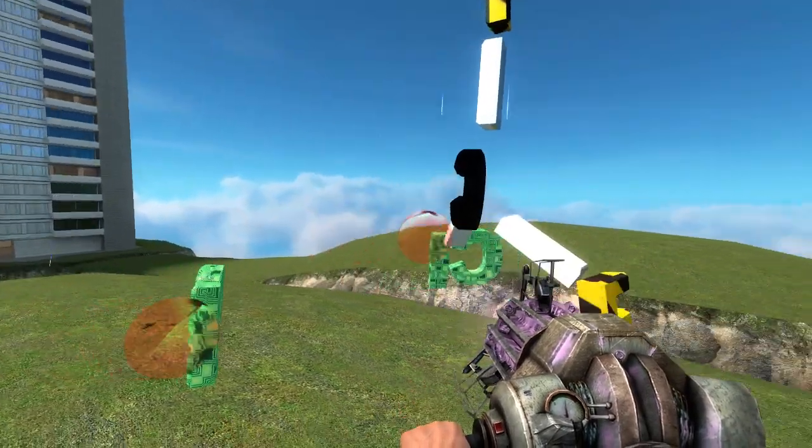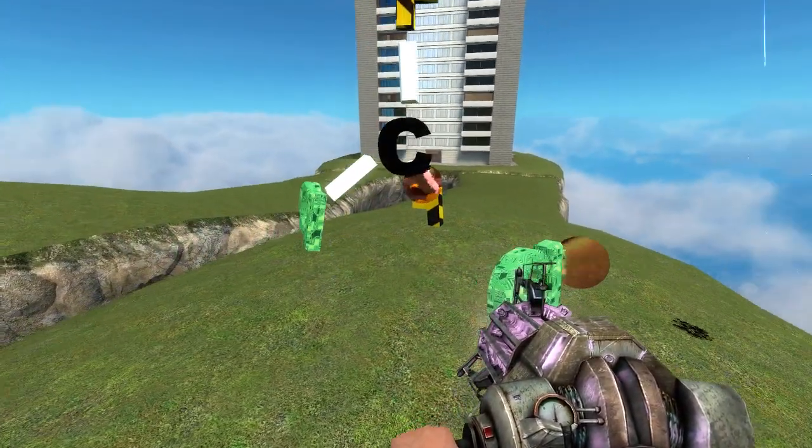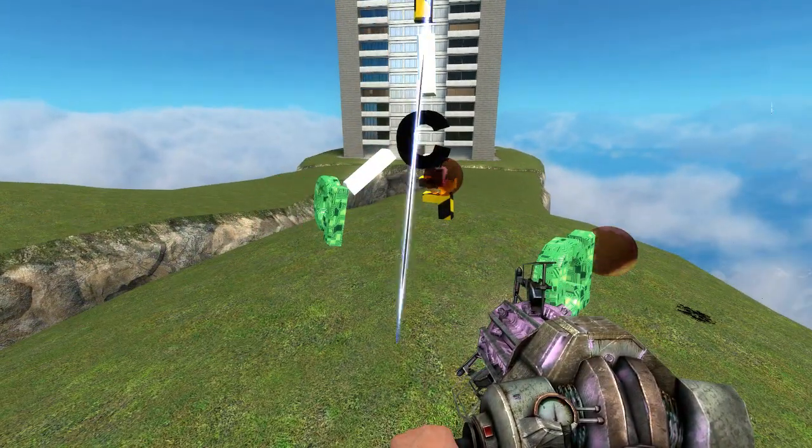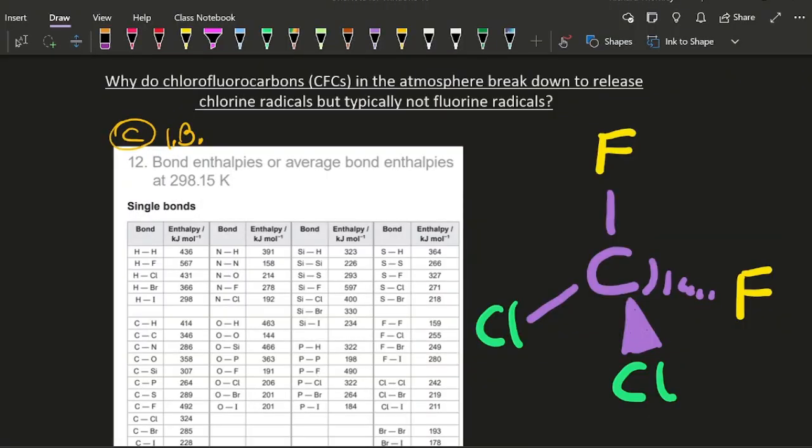These are both radicals and are highly reactive. The chlorine radical destroys ozone. Okay, so why do chlorofluorocarbons break down to release chlorine radicals, but typically not fluorine radicals?